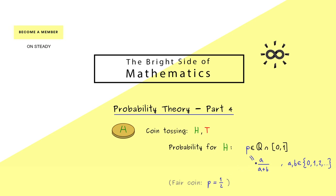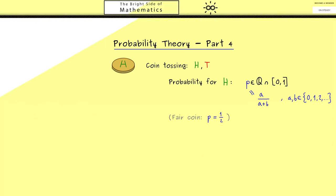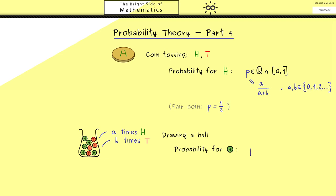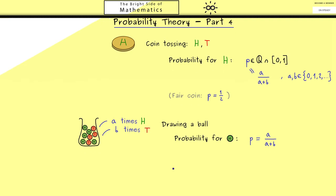We can write p as a divided by a plus b, where a and b are natural numbers including 0. For a fair coin, p equals 1/2, so we choose both a and b to be 1. With this setup, we can see the whole random experiment as an urn model — a container where we put different kinds of balls. We use green balls for heads and red balls for tails, with a green balls and b red balls. Drawing one ball randomly gives probability p of getting heads.